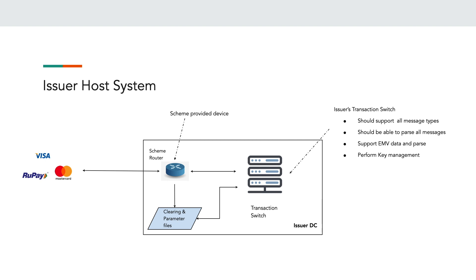The next part is transaction processing or authorization certification. Before looking at certification for transaction processing, let's look at the issuer host system. Schemes usually use this term to refer to the issuer's actual authorization processing platform. The transaction is initiated from the schemes — Visa, Mastercard, RuPay — and then routed to a router device provided by the schemes, which forwards the authorizations to the issuer's transaction switch.